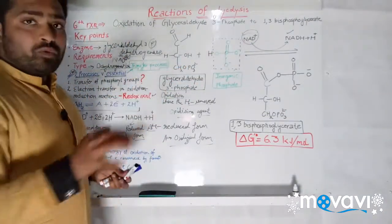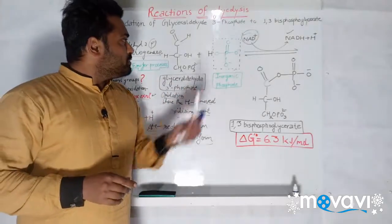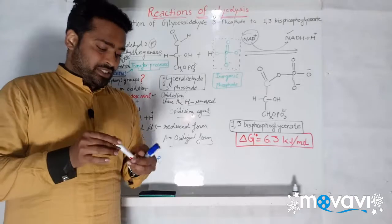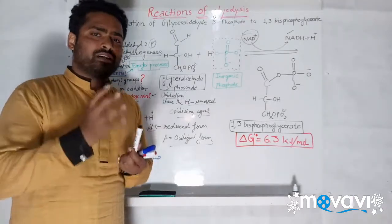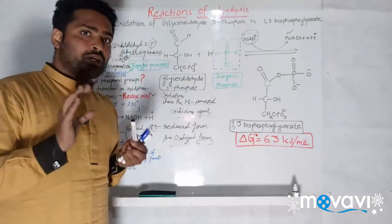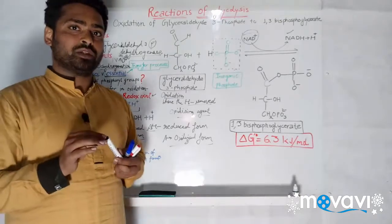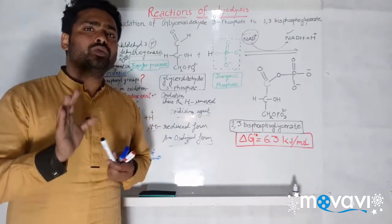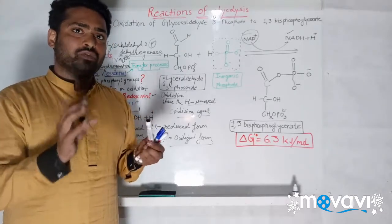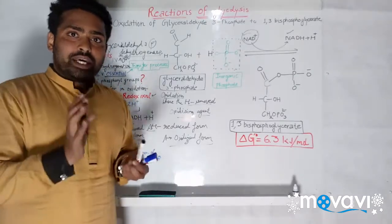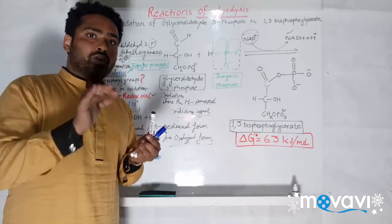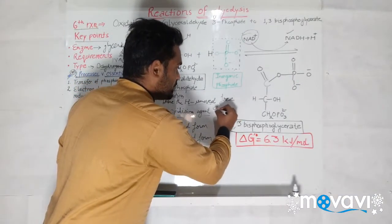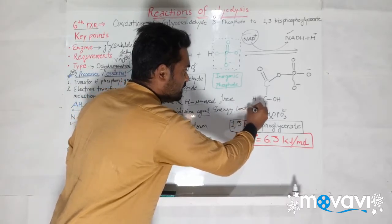Regarding the transfer of phosphoryl groups seen in previous reactions — we are transferring phosphoryl groups because the free energy content of glucose is too low. After we transfer the phosphoryl group, the free energy content is increased. So we are increasing the free energy content of the glycolytic intermediates through subsequent reactions.